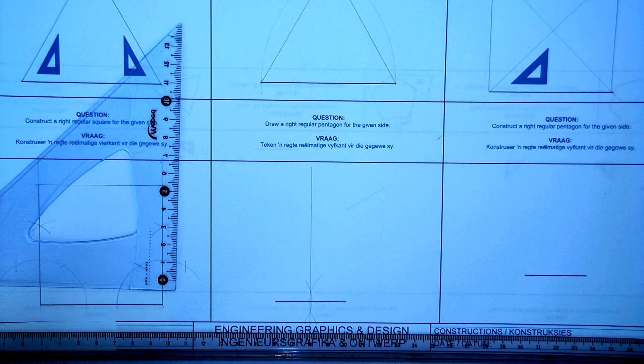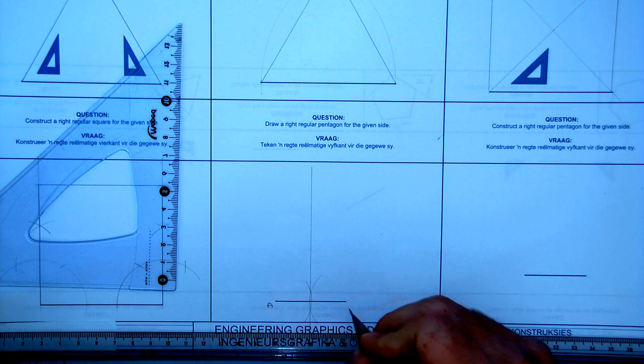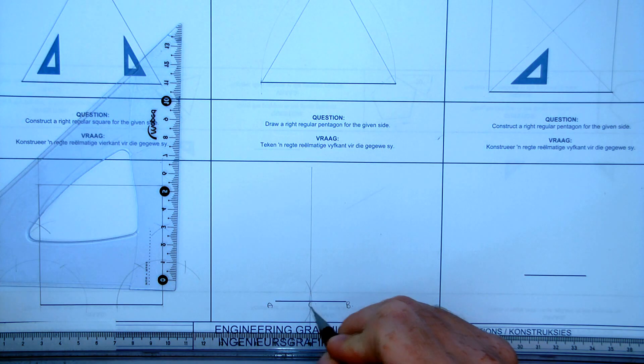Now, my next step is to take a side length. Let's label it. Put this one A, make it B. Right, and let's make this middle point C.